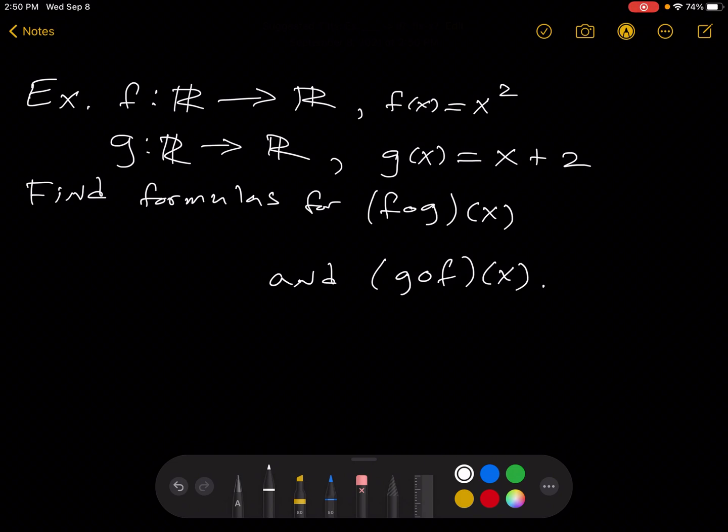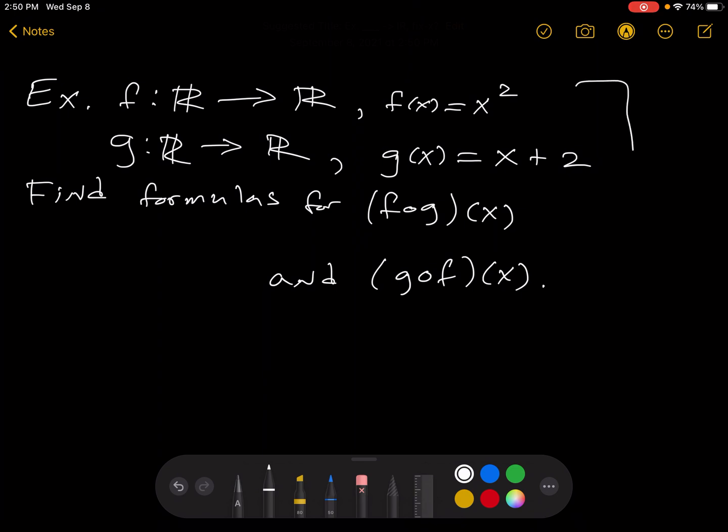Here's another example similar to the homework. So we're given this here, two functions whose domain and target is the real numbers, and they're given by rules. f of x equals x squared, g of x equals x plus 2.